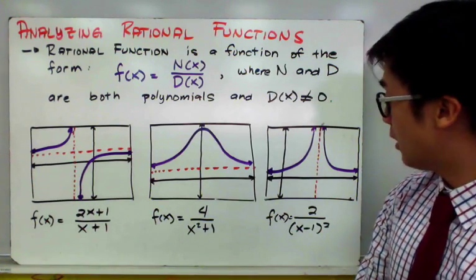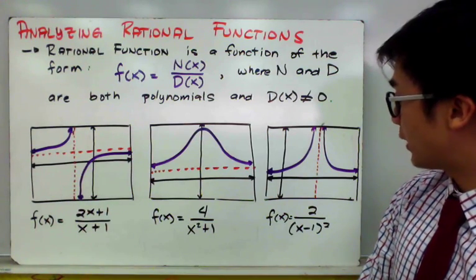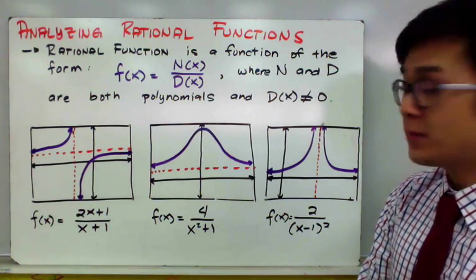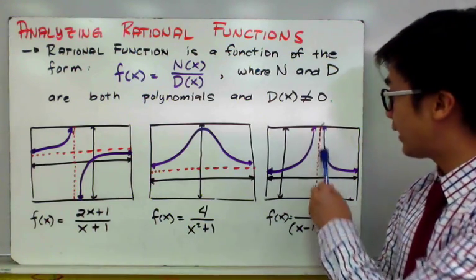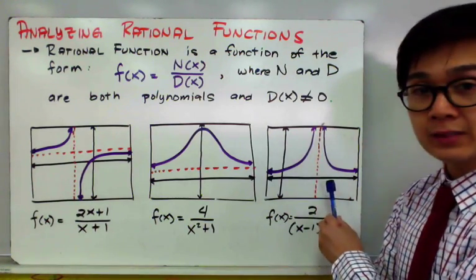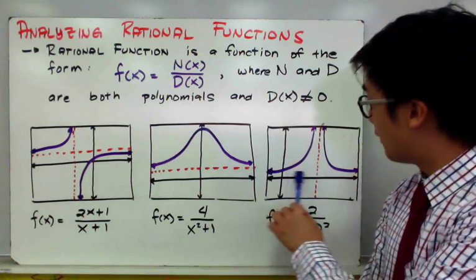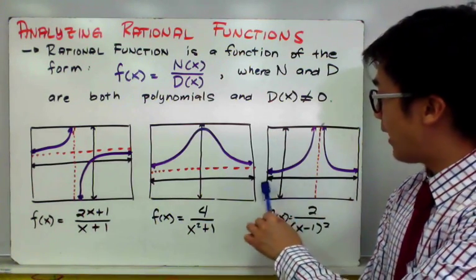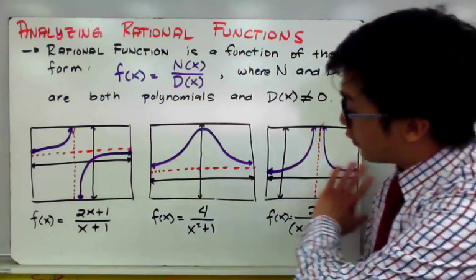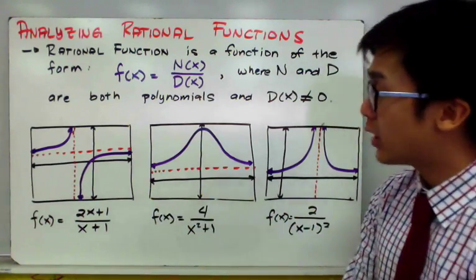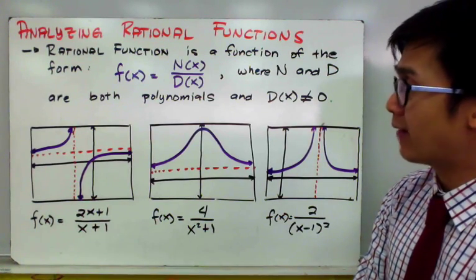In our third example, we have f of x is equal to 2 all over quantity x minus 1 squared. You will see that our vertical asymptote is right here, and the horizontal asymptote for this particular graph is the line along the x-axis. These are some examples of rational functions and their graphs.